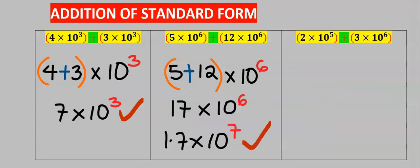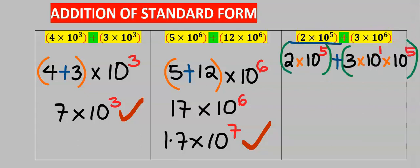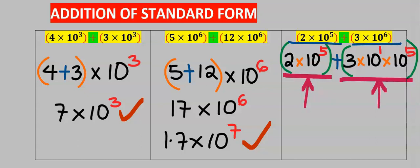This becomes our answer. Now let's consider this question where the powers of the 10 are not the same. To proceed with the addition, I'm going to make both powers equal. This one will remain as is, while this will become 10 to the power of 1, multiplied by 10 to the power of 5, giving 10 to the power of 6. Both are now the same.